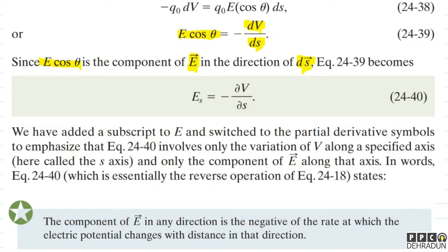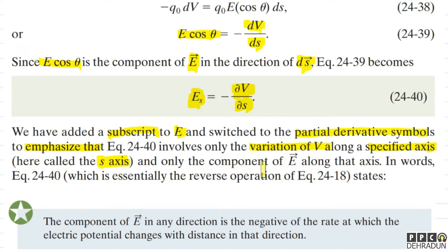We write: E_s = −∂V/∂s. The subscript s means the component of E in a specified direction s. Partial derivative notation is used to emphasize that this equation involves only the variation of V along a specified axis. So the component of E along any direction tells us how fast the potential is changing in that direction.